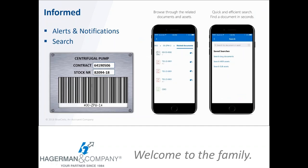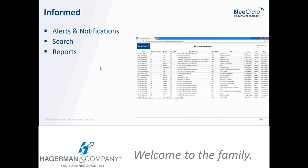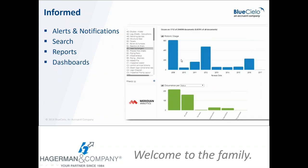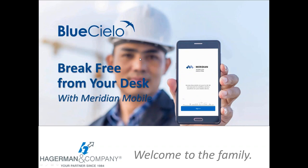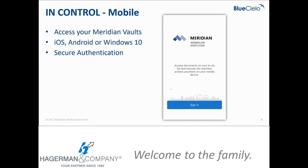With mobile, Meridian searching can be done off of barcodes or QR codes. If equipment in your plant has barcodes or QR codes, a maintenance technician can use a mobile device to scan it and Meridian will retrieve all related documents without having to type in equipment numbers. Meridian also offers full reporting capabilities and document dashboards for a more visual view of what's going on in the system.